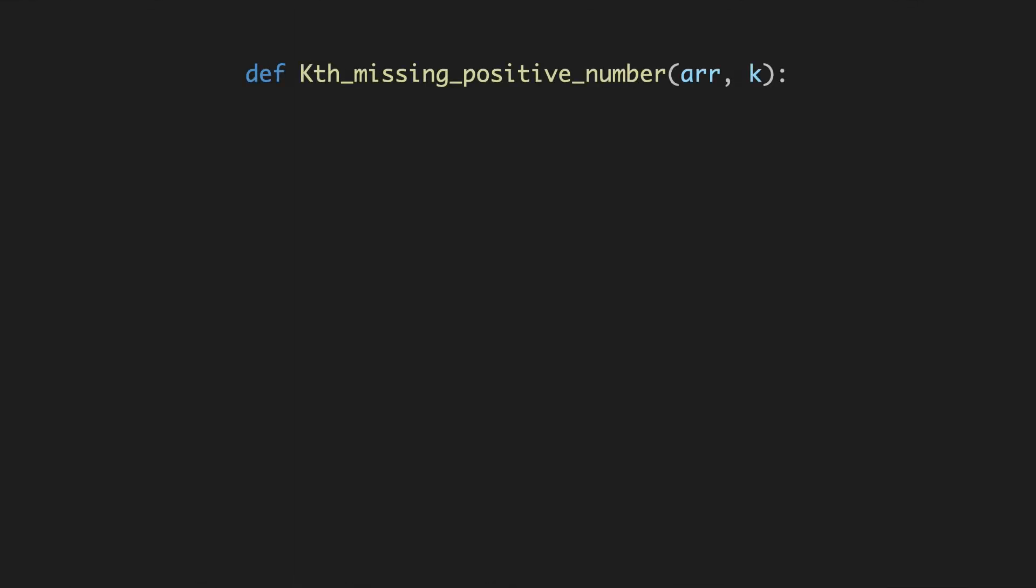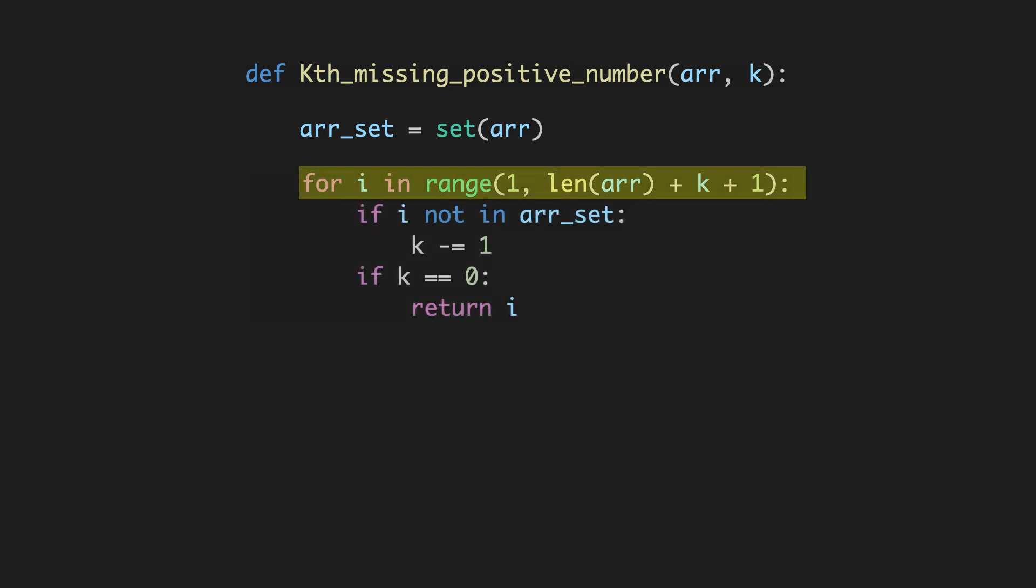The function kth_missing_positive_number takes an integer array and k as parameters. So the first thing we'll do is create a set out of the input array. That will make our lookups constant. Next, we'll iterate our variable i from 1 to the length of array plus k plus 1. By adding 1 to the range, we ensure that k is included in the iteration.